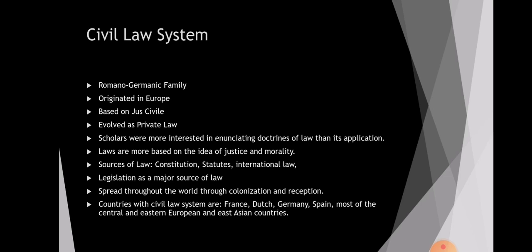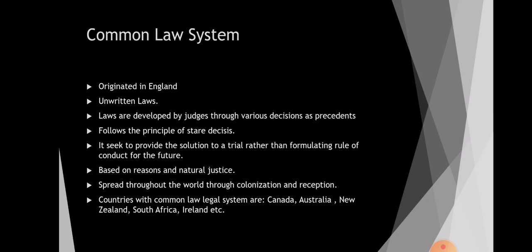The civil law system evolved as a private law used to maintain relations between individuals, and gradually developed into public law. Scholars in this legal system are more interested in enunciating doctrines rather than their application — they focus on making laws, principles, and doctrines based on ideas of justice and morality. Sources of law include the constitution, statutes, and international law, with legislation always as the primary source. It spread throughout the world through colonization and voluntary reception. Countries with civil law systems include France, the Netherlands, Germany, Spain, and most of central and eastern Europe and East Asia.